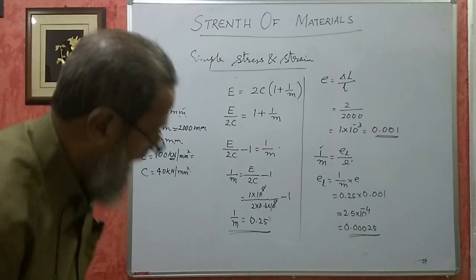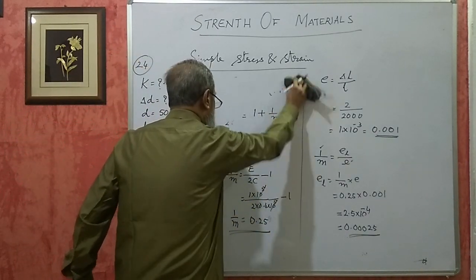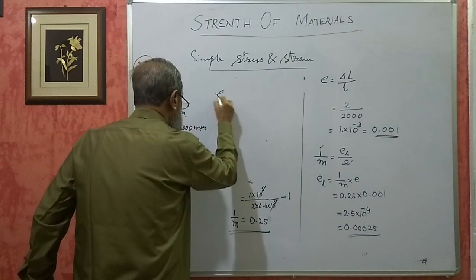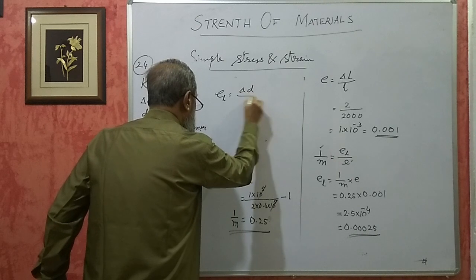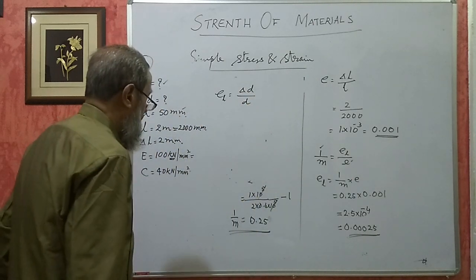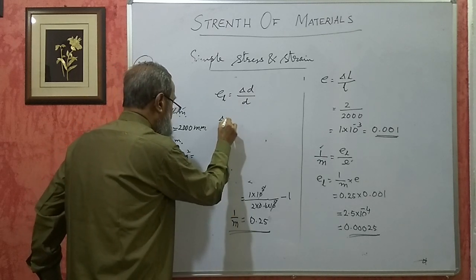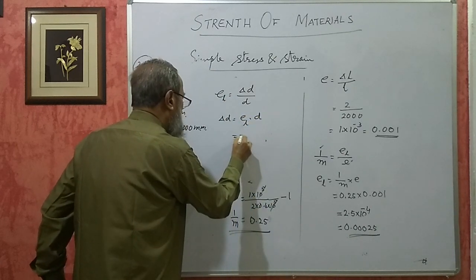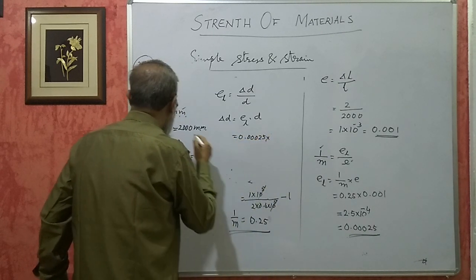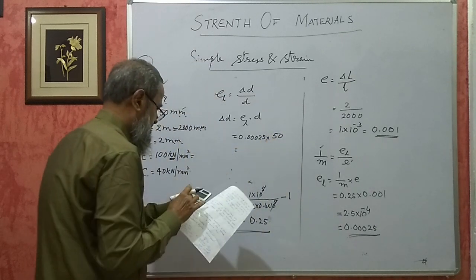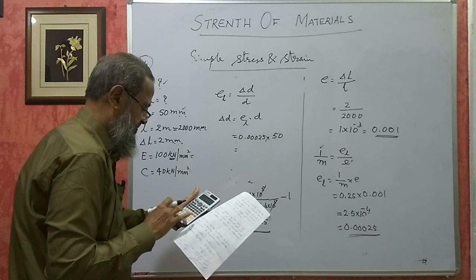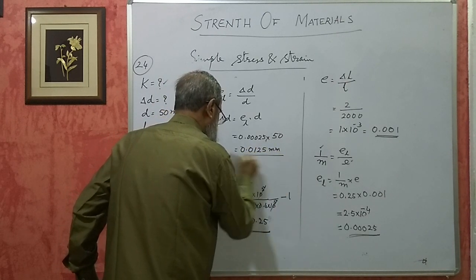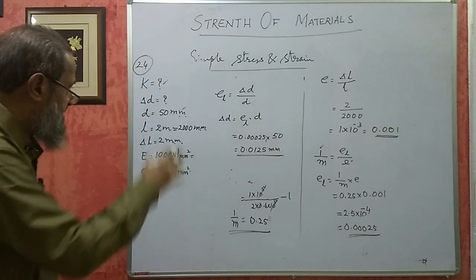Once we have lateral strain, we know that lateral strain equals change in diameter divided by original diameter for a circular object. So delta D equals lateral strain into original diameter, which is 0.00025 into 50 mm. This gives 0.0125 mm. This is the change in diameter. Friends, I have done a few problems.